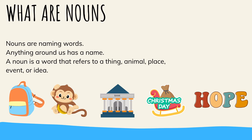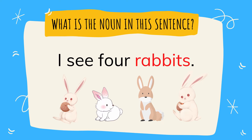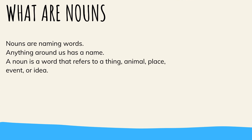Let's take a look at some examples. I see four rabbits. The noun in this sentence is rabbits — they are animals, so they are nouns. Again, a noun is a word that refers to a thing, animal, place, event, or idea.